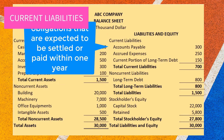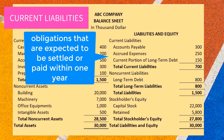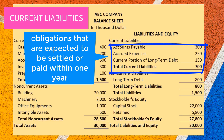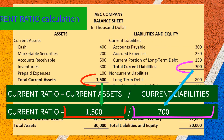Current liabilities include obligations that are expected to be settled or paid within one year. These include accounts payable, accrued expenses, and the current portion of long-term debt.